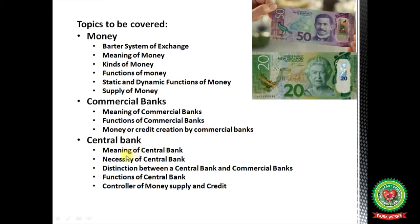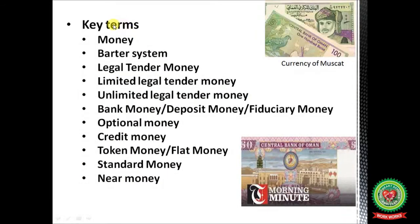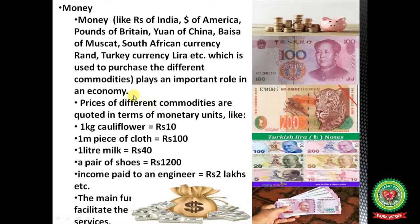Under the central bank, you will learn about its meaning, necessity, distinction between the central and commercial banks, functions of the central bank, and controller of money supply and credit. Key terms include: money, barter system, legal tender money, limited legal tender money, unlimited legal tender money, bank money, deposit money, fiduciary money, optional money, credit money, token money, flat money, standard money, and near money.